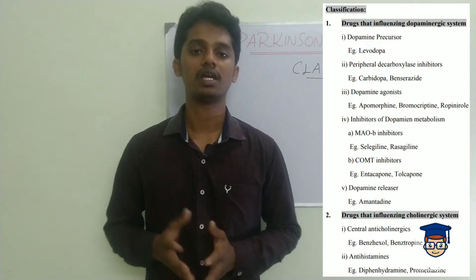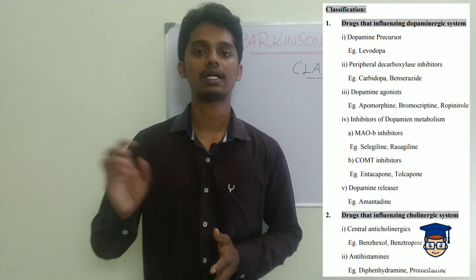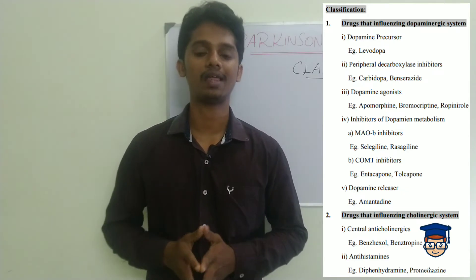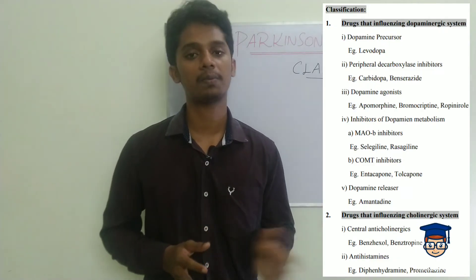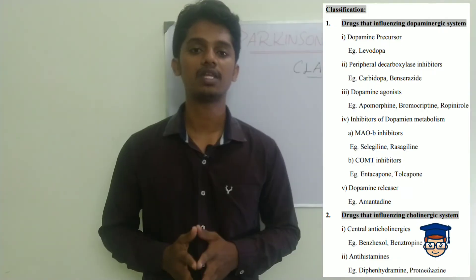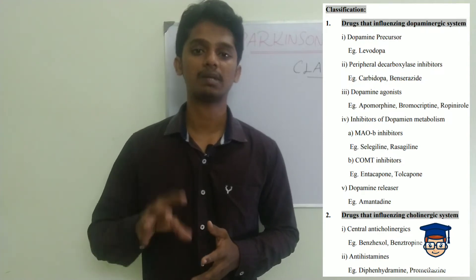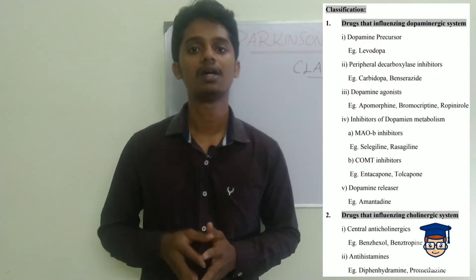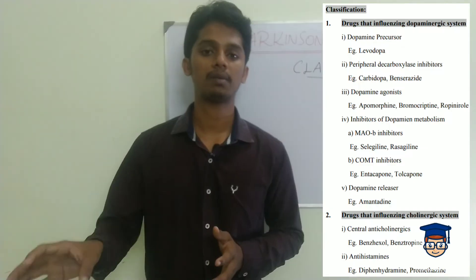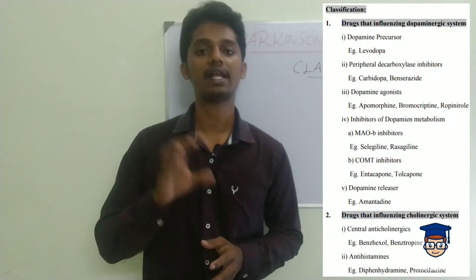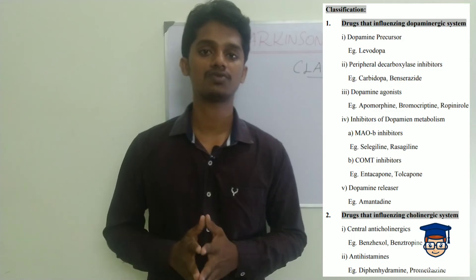The next category is dopamine agonists. These drugs act directly on dopamine receptors. Examples include bromocriptine and apomorphine. Next are inhibitors of dopamine metabolism. By inhibiting dopamine metabolism, dopamine remains available at nerve terminals, and motor functions are maintained.